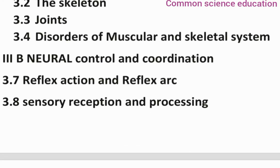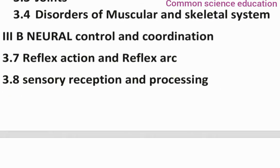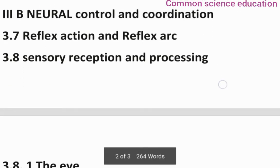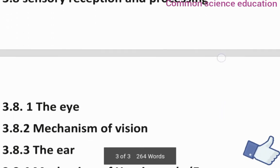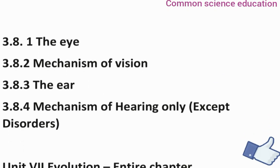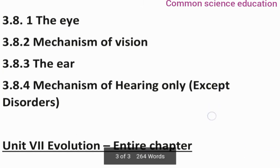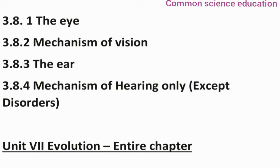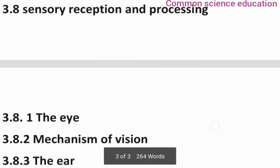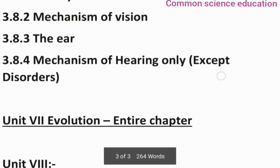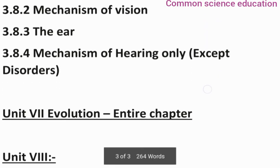Also deleted is section 3.8B, Neural Control and Coordination, and 3.8.4 Mechanism of Hearing — so these topics are not to be prepared. Unit 8, the Evolutionary topics, are also completely deleted.